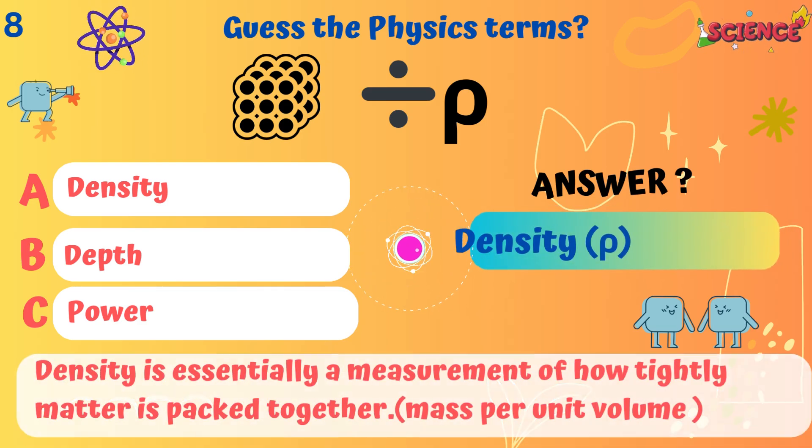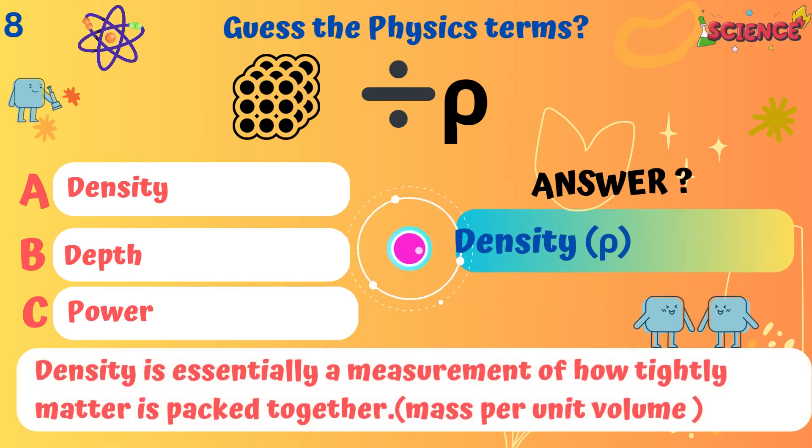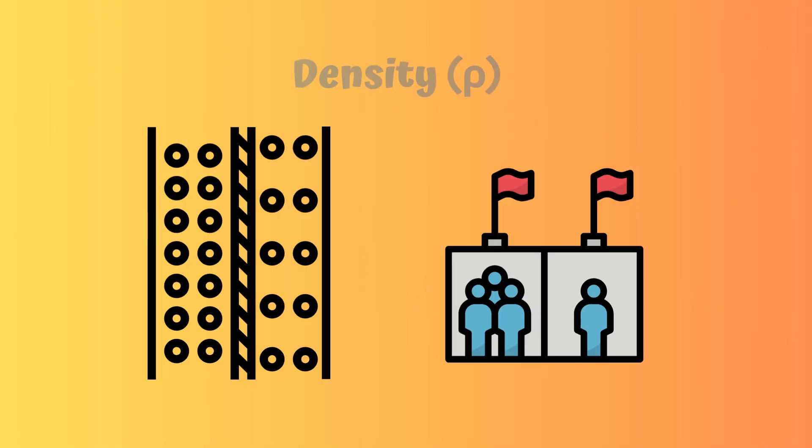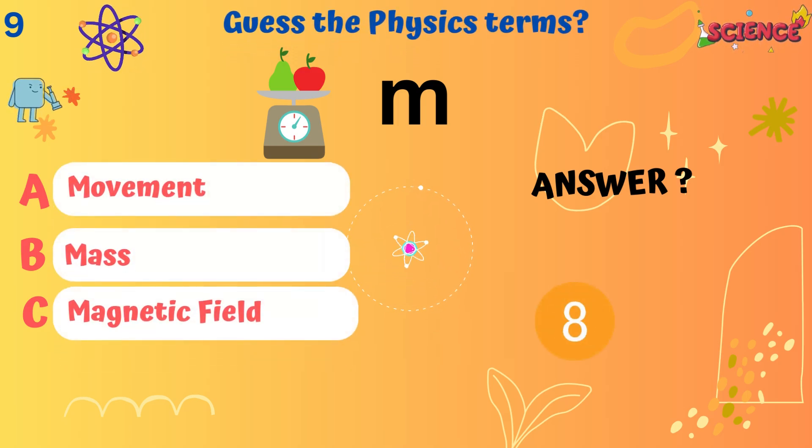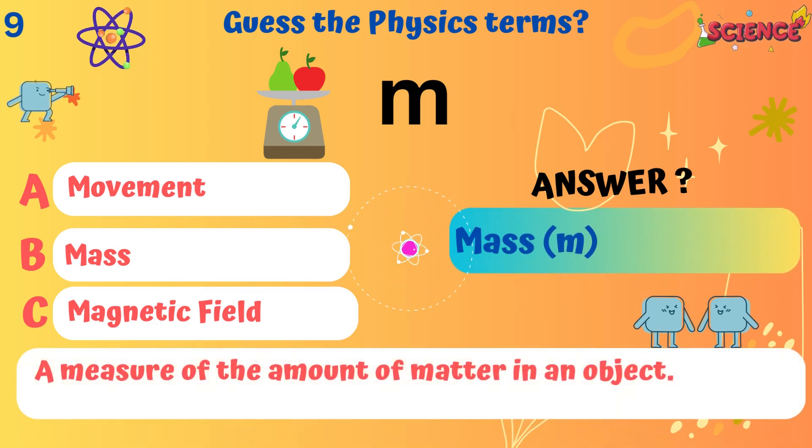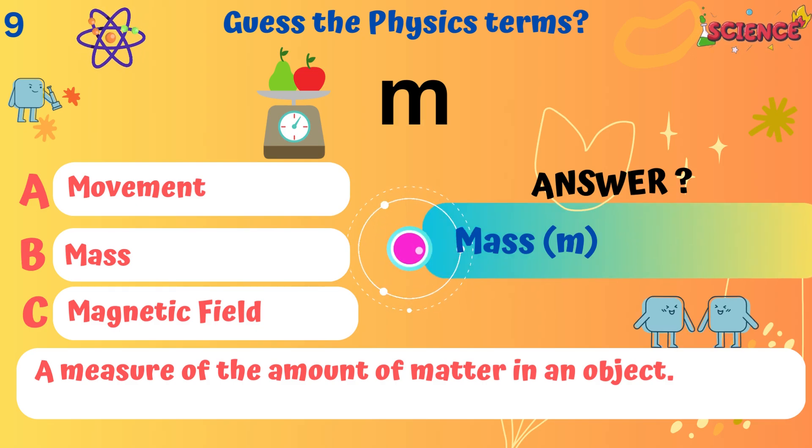Density. Density is essentially a measurement of how tightly matter is packed together. Mass. A measure of the amount of matter in an object.